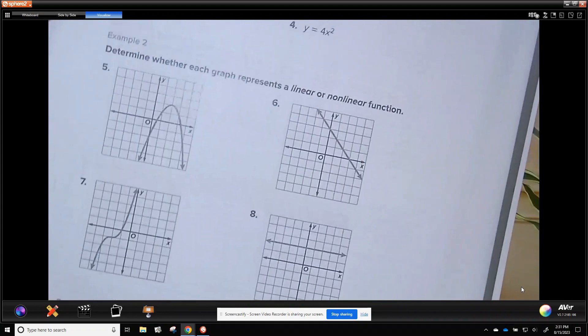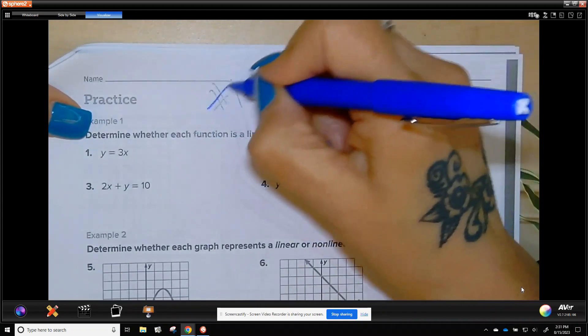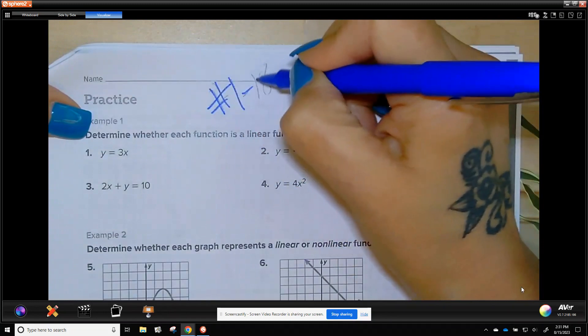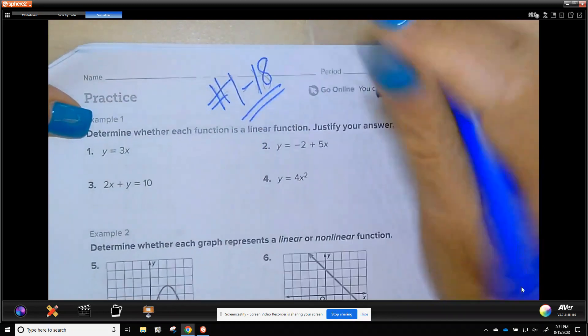And that is it for Lesson 2. Your assignment is on page 19 and is number 1 through 18. Let me know if you have any questions.